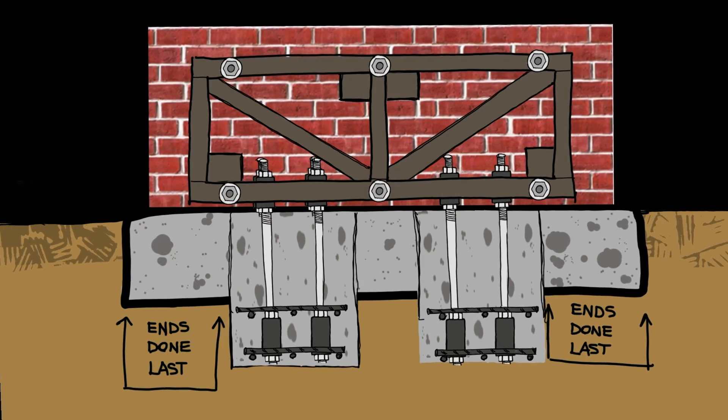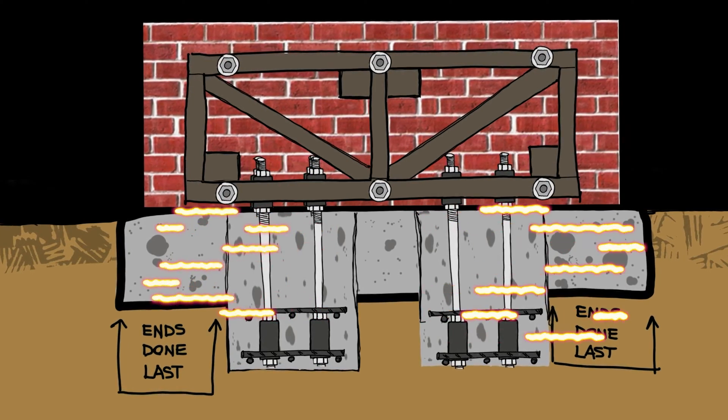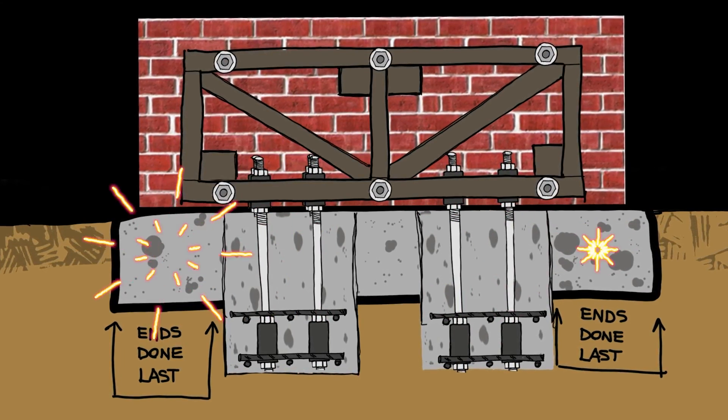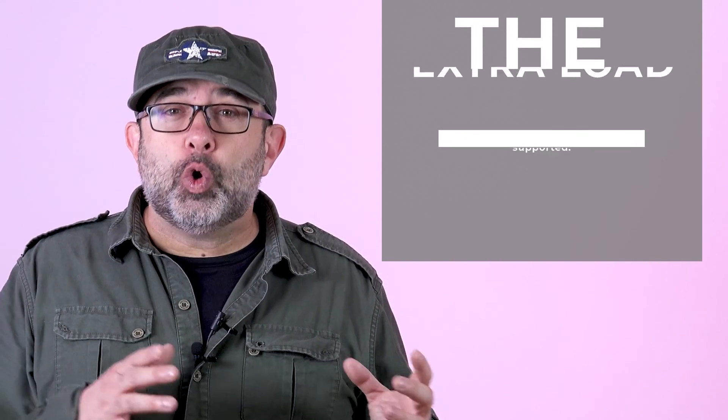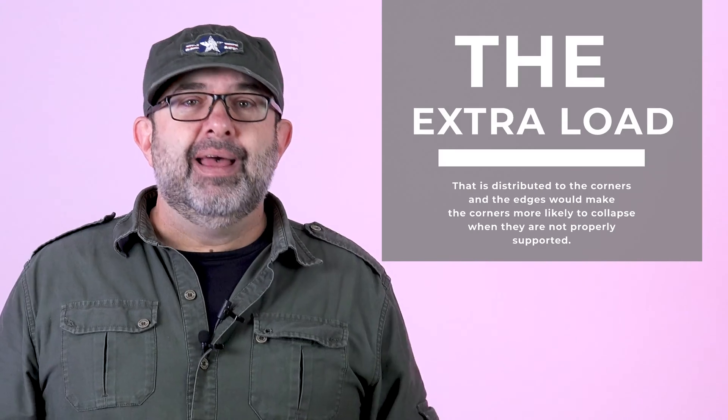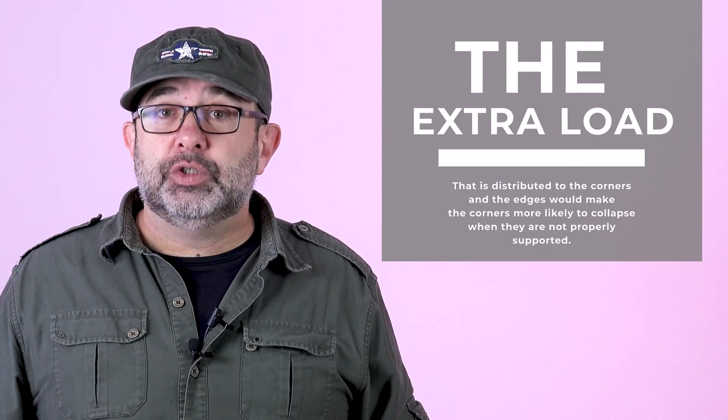You may ask why you should do this. The reason is that structural loads should be transferred to footings evenly and having the ends sustained may prevent a corner collapse. Remember, there are cases in which corners have pillars and columns that transfer the loads directly to the ground in a more concentrated manner.